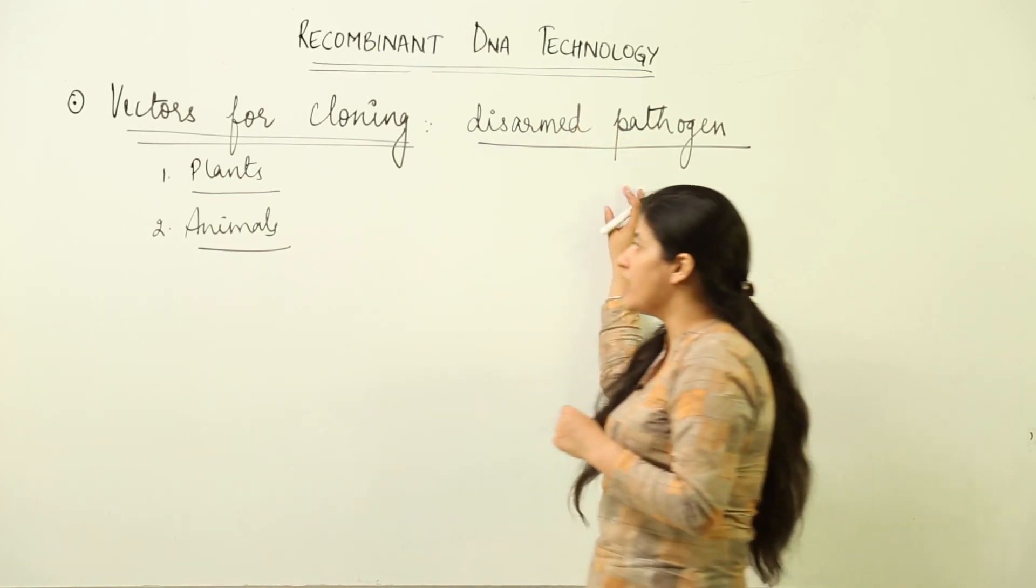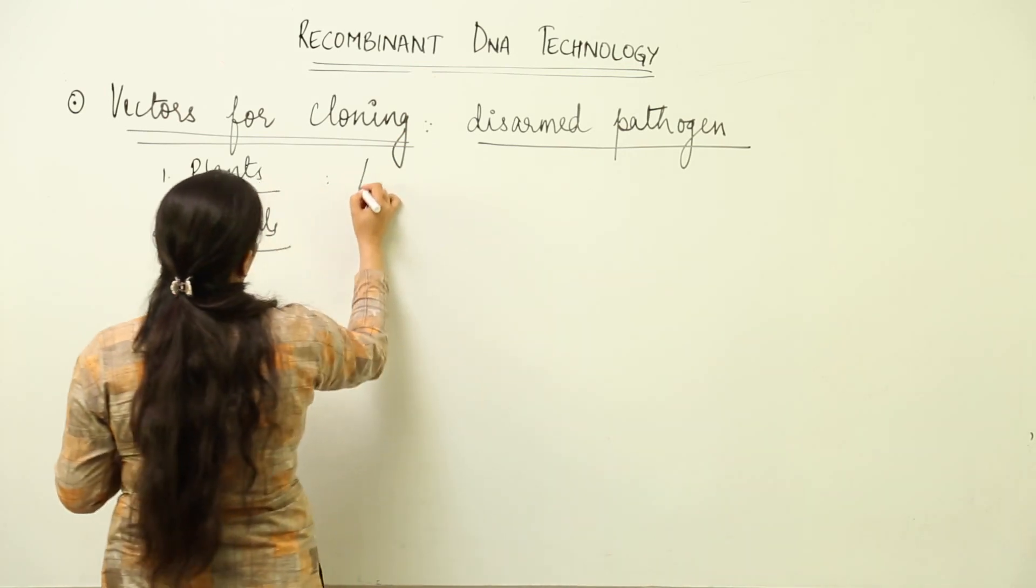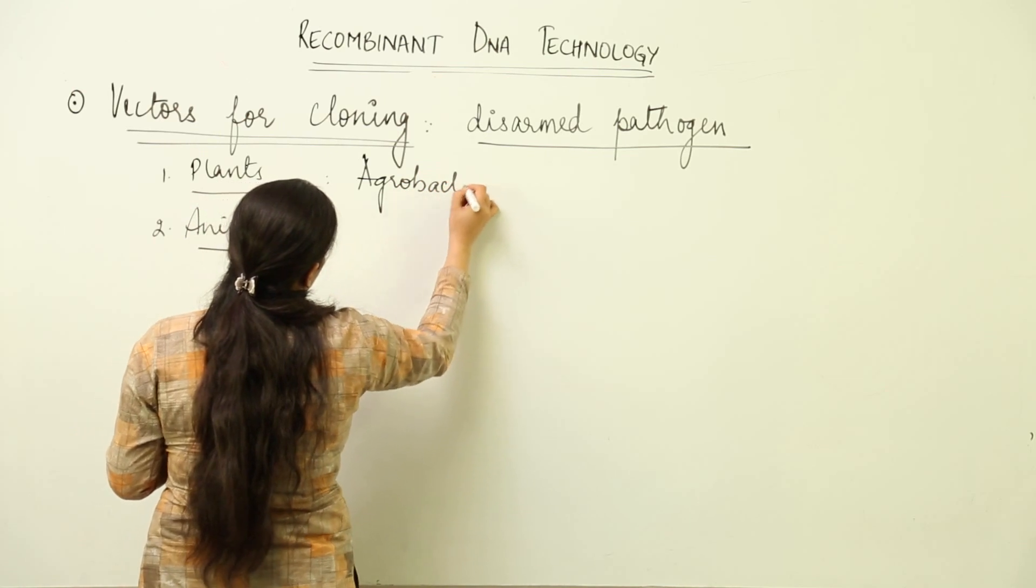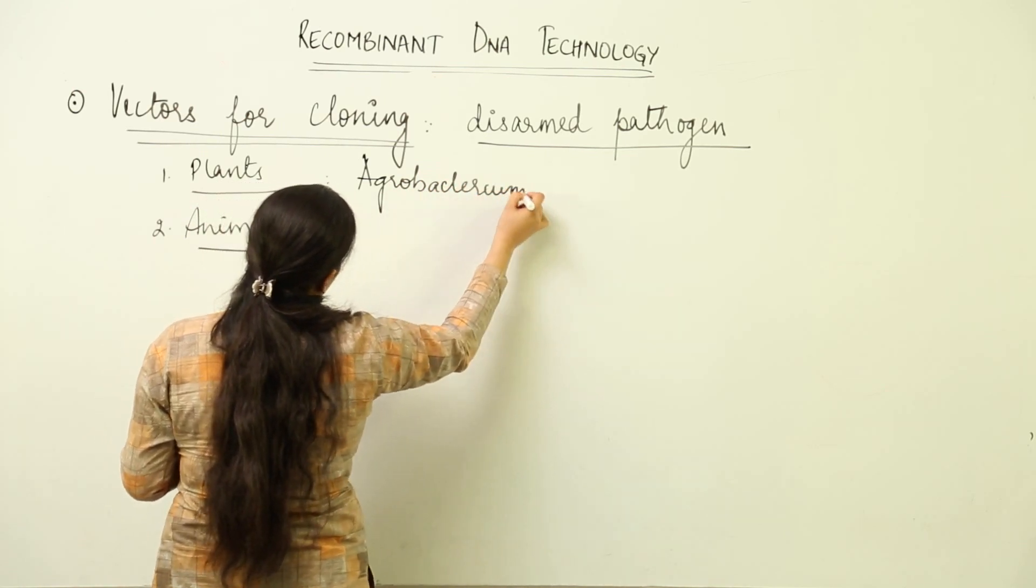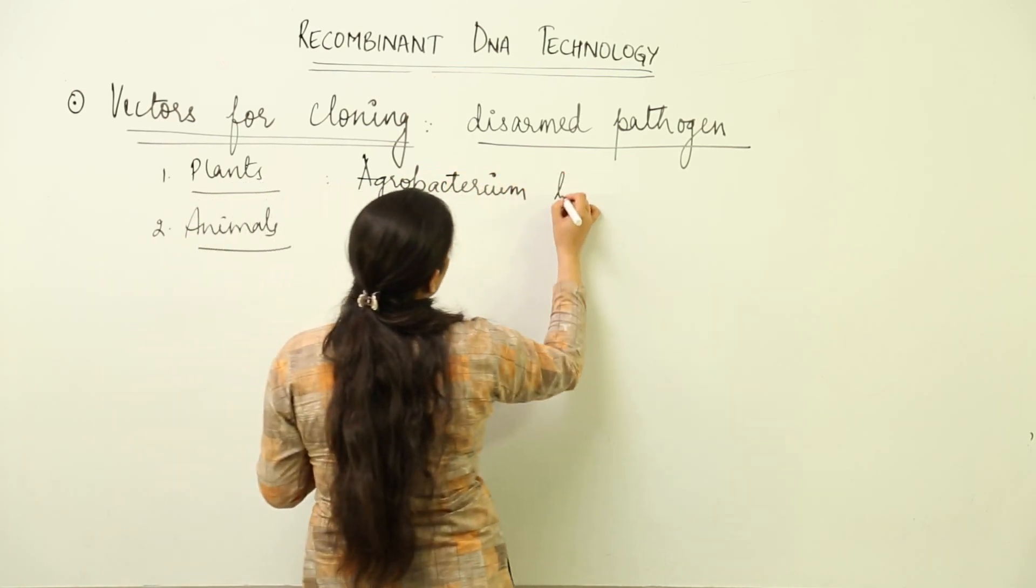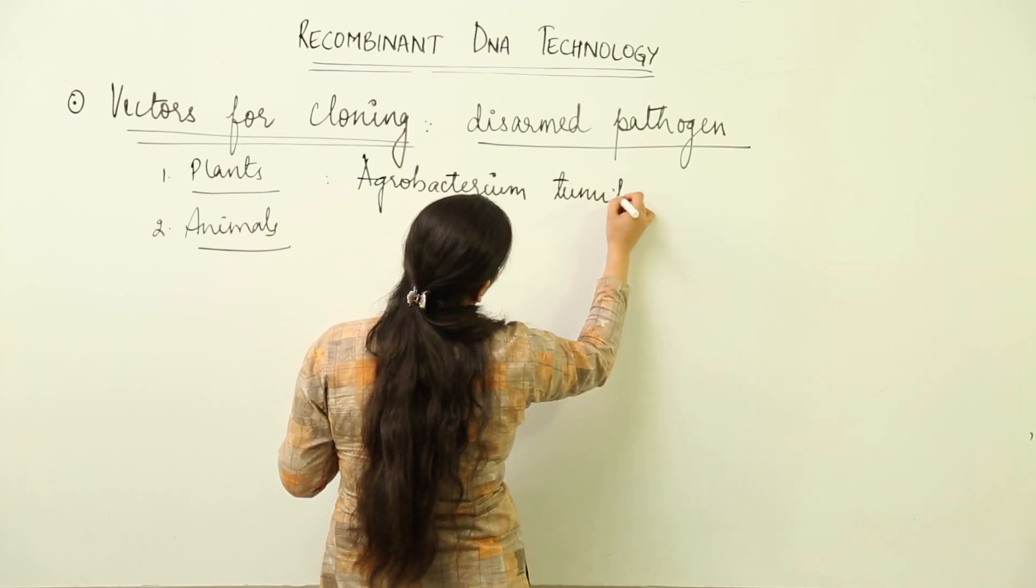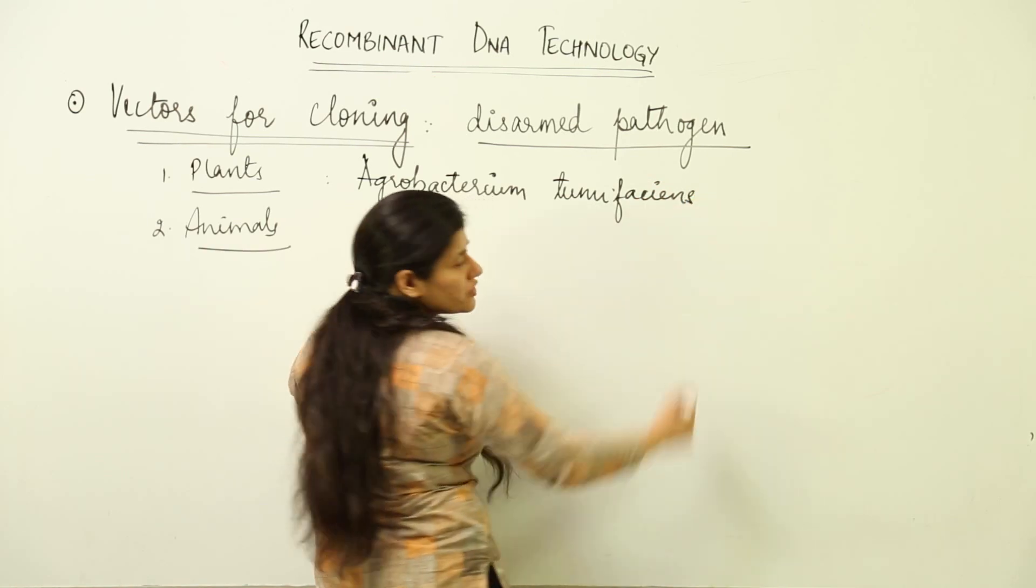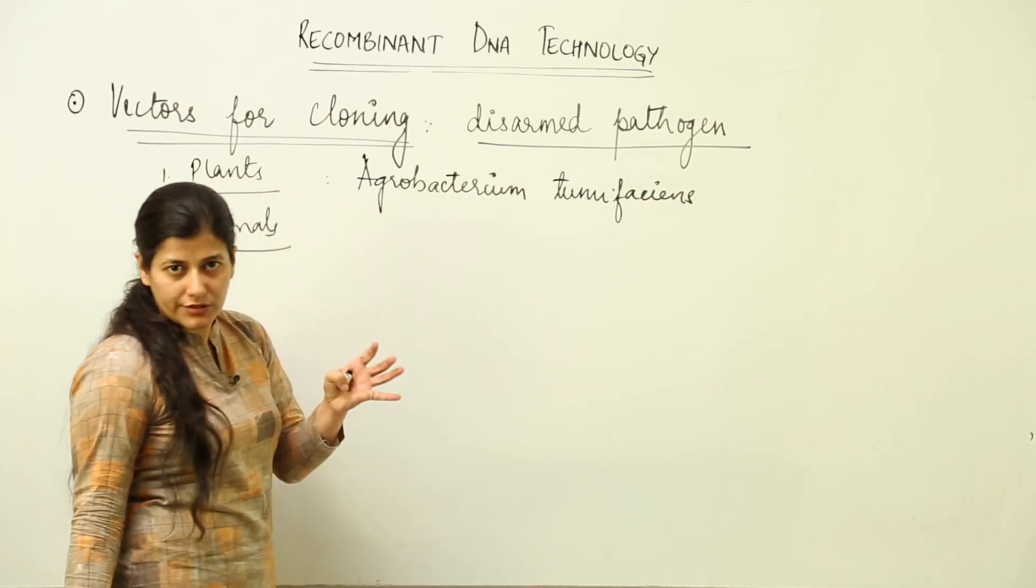I would tell you an example. In plants we have the example of Agrobacterium tumefaciens, that is a kind of bacteria responsible for causing crown gall disease, or otherwise you can call it responsible for causing tumors in the plant.